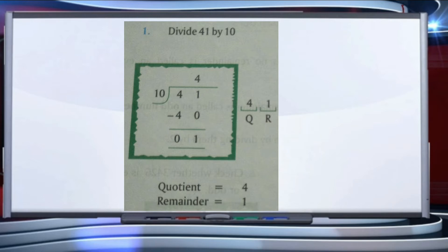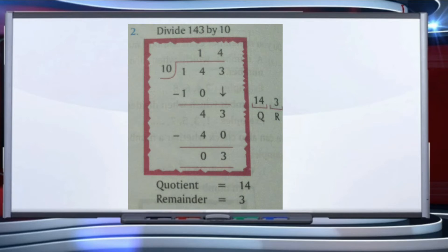For 41 divided by 10: 10 fours are 40. 41 minus 40 is equal to 1. The quotient is 4 and the remainder is 1. So we write quotient 4, remainder 1.